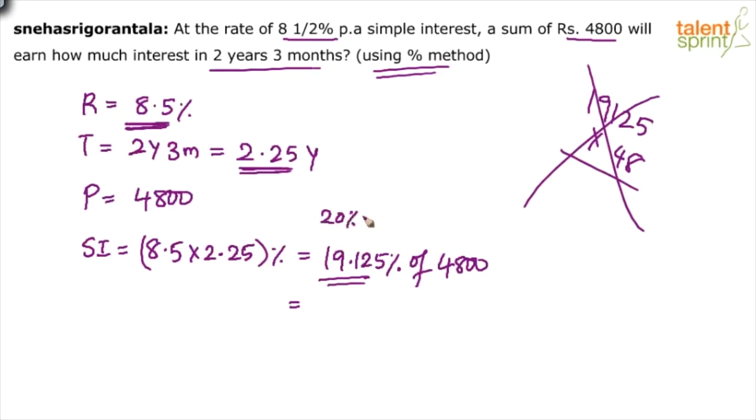We can take this 19.125 percentage. I would take it as 20% minus 1% plus 0.125 percentage. I mean that's what I get. I mean that's what I am thinking would be easier. Let me quickly do it now.